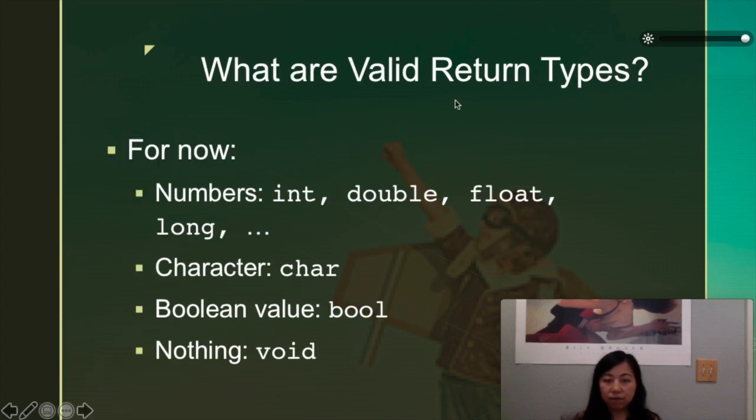So what are the valid return types? You can have numbers like integers, double floats and long, those that we listed before character types, we've used a boolean type, and then we just talked about void. So it's just for now, because later on, there will be more data types you will see. But for now, this is enough for you to play with.